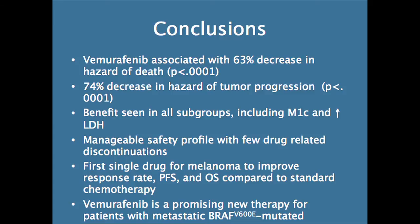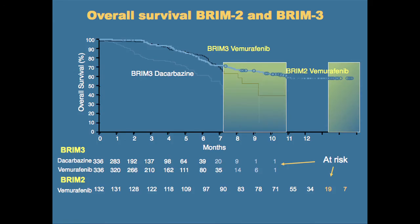In conclusion, there's substantial benefit for vemurafenib with a 63% decrease in the risk of dying. It was the first single drug for melanoma to improve response, progression-free survival, and overall survival compared to standard chemotherapy. Here's another look at the curves — this is the combination of both the BRIM-2 and BRIM-3 curves. They are very similar and both substantially better than the DTIC arm. And as you can see, some of these are sustained for a long period of time.